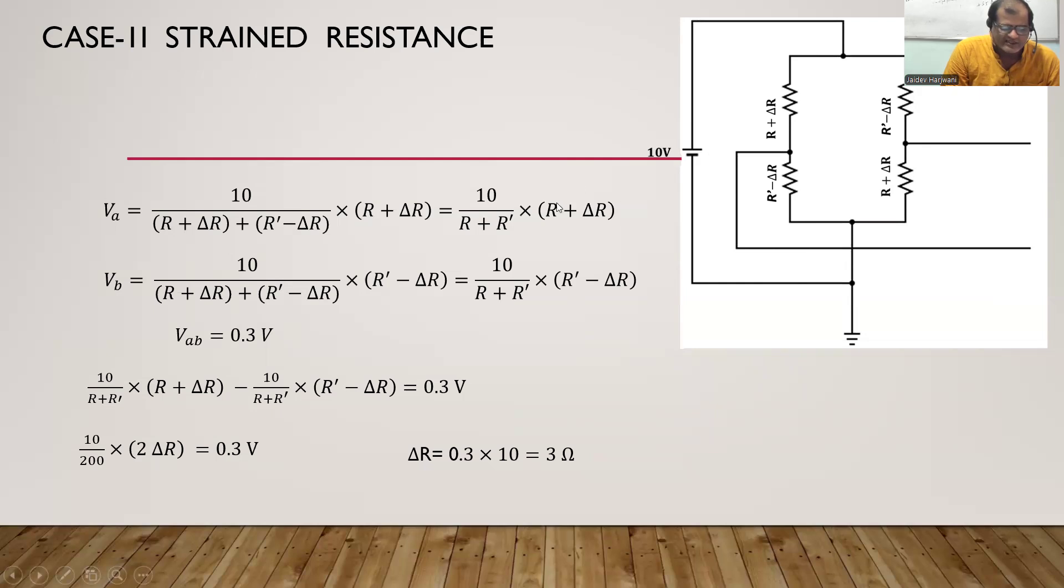Similarly the voltage across R' minus delta R will be Vb. Now the difference of voltage Vab is given. By solving this one I can find the value of delta R is 3 ohms. I hope you understand the question, thank you very much.